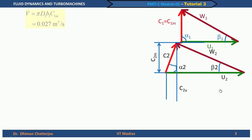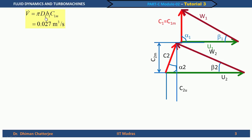Continuing with the velocity triangles, we find the volume flow rate V-dot equals pi times D1 times B1 times C1m. There is no information about area blockage, so we neglect it, taking phi equal to 1. This gives V-dot equal to 0.027 cubic meters per second. This is the first part of the problem.